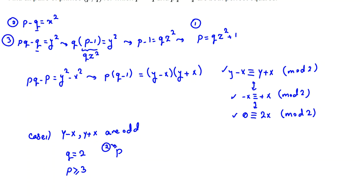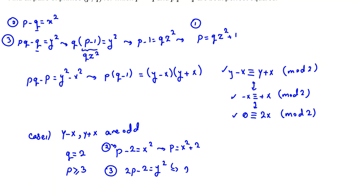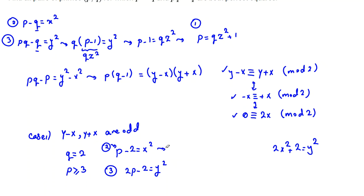From equation 2 with Q=2: P minus 2 equals X squared. From equation 3: 2P minus 2 equals Y squared. From the first, P equals X squared plus 2. Substituting into 2P minus 2: we get 2(X squared plus 2) minus 2 equals Y squared. Subtracting these two equations gives P equals Y squared minus X squared, which factors as (Y minus X)(Y plus X).